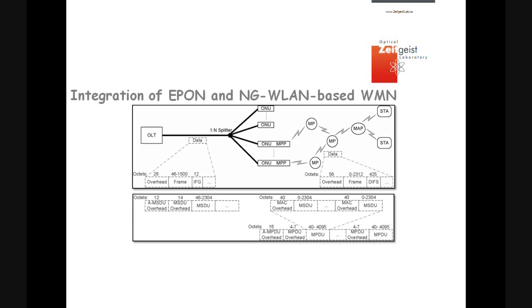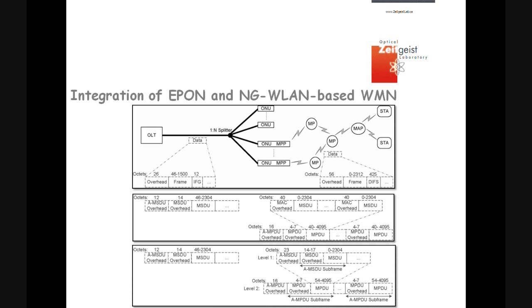This figure shows the packets when AMSDU in EPON and AMPDU in WLAN are used. Further, we consider the joint two-level aggregation for wireless segments, as shown in the right-hand side figure.